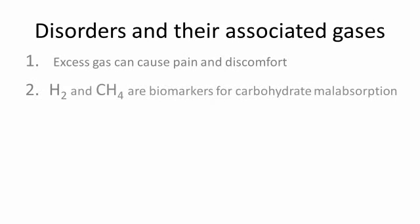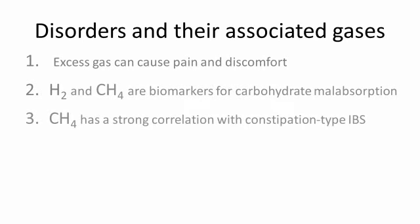Hydrogen and methane are biomarkers that can be used for characterizing carbohydrate malabsorption within patients. Methane itself is an acidic gas that has been associated with disruptions in peristaltic activity. In addition, the production of methane has been strongly correlated with constipation type irritable bowel syndrome.